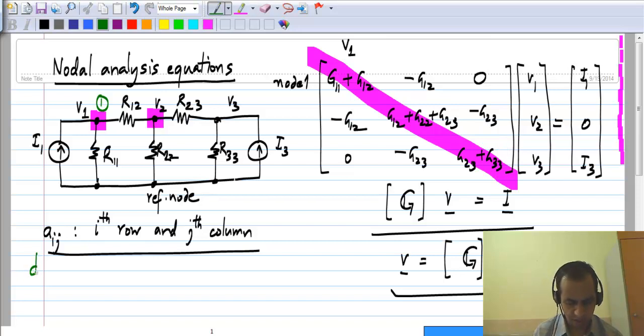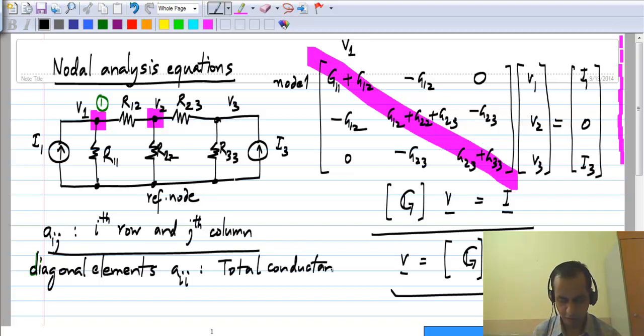So the diagonal elements, if you look at Aii, that is diagonal element in the ith row, then this has the total conductance at node i. So that should be pretty obvious.